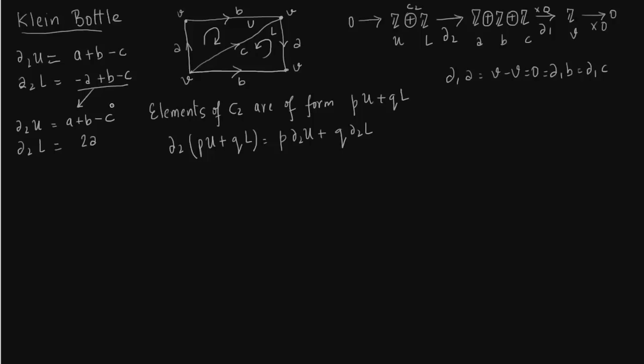Yeah, so the change of basis has been done to make computations easy. So now see this 2A comes from delta 2 U minus delta 2 L. So B minus C, B minus C, we cancel out.